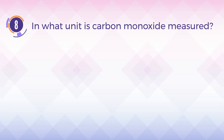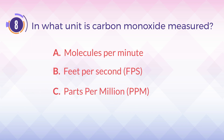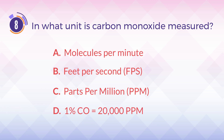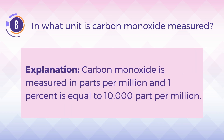Number 8. In what unit is carbon monoxide measured? A. Molecules per minute. B. Feet per second (FPS). C. Parts per million (PPM). D. One percent carbon monoxide equals twenty thousand PPM. The answer is C: parts per million (PPM). Carbon monoxide is measured in parts per million, and one percent is equal to ten thousand parts per million.